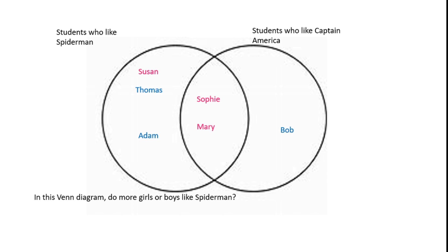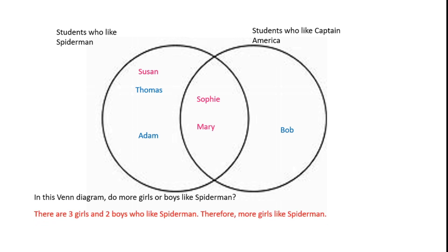Let's have a go at another question. In this Venn diagram, do more girls or boys like Spider-Man? There are 3 girls and 2 boys who like Spider-Man — make sure you include the values in the middle too. So more girls like Spider-Man. The 3 girls who like Spider-Man are Susan, Sophie and Mary, and the 2 boys are Thomas and Adam.